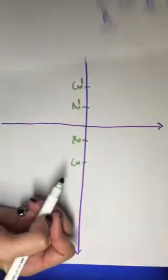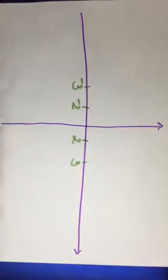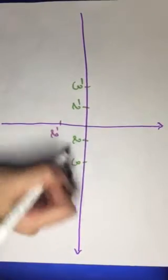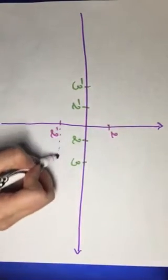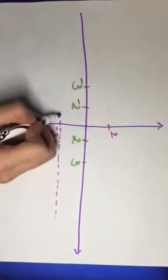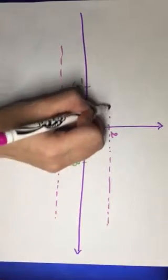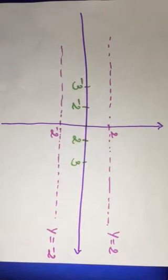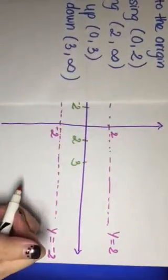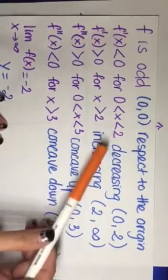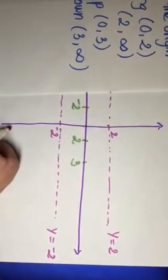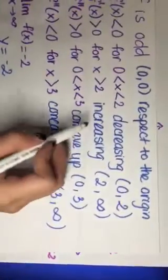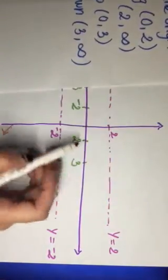I'll draw the horizontal asymptotes at y = 2 and y = -2. Now looking at the first derivative condition: the function is decreasing from 0 to 2, so from the origin to x = 2 the graph goes downward.